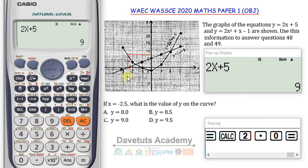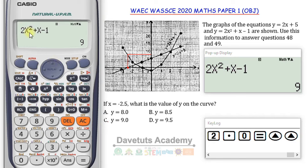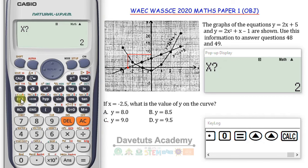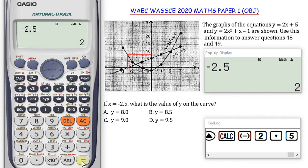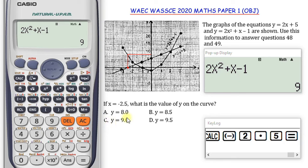We also solve question 49. Still on the same graph, we are told that if x equals minus 2.5, what is the value of Y on the curve? Since they said 'on the curve,' we use y = 2x² + x − 1. I press up to go back to that equation and press CALC, putting x as minus 2.5, and press equals — the answer is 9. Option C is the correct solution, and with that it is done and dusted.